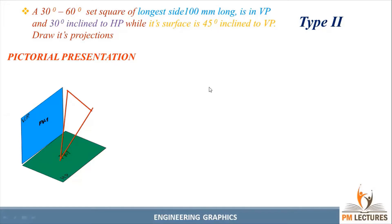First we need to write the given data. The polygon is a set square and the dimension of the polygon is 30 degree, 60 degree and long side 100 mm in VP. The surface inclination is 45 degrees inclined to VP and the edge inclination is 30 degrees inclined to HP. This is a both-inclined problem. The condition provided is that the 100 mm longest side is in VP.